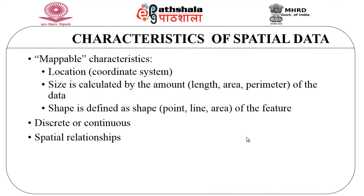There are various characteristics of this kind of spatial data. The mappable characteristics include the location of the data, which can be represented in a coordinate system. The next one is the size associated with the data, calculated by the amount of data and represented in the form of length, area, or perimeter. The shape is defined as the shape of the feature, represented as a point, line, or area. Spatial data can be discrete or continuous, and there are various types of spatial relationships associated with it.